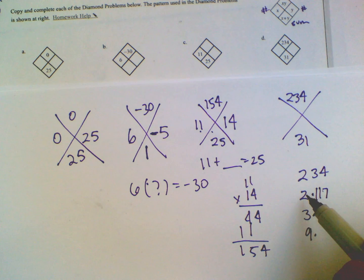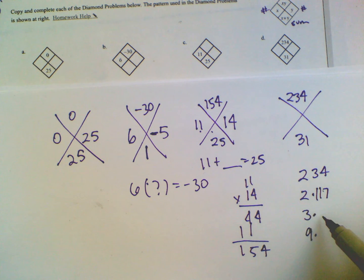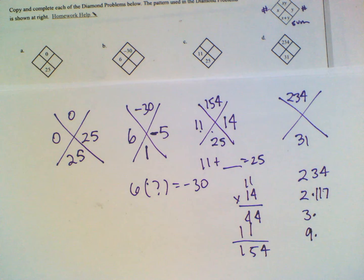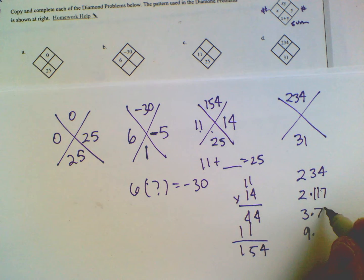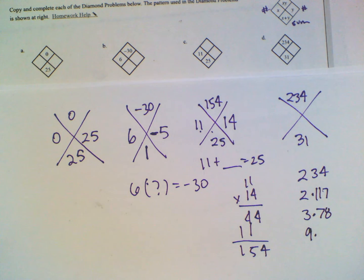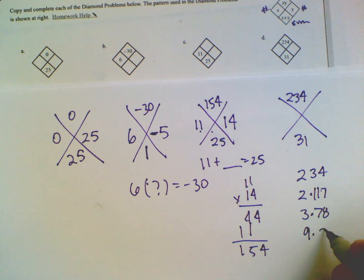So I can find a product of three times something is 234. So I'll take 234 and divide it by three and I get 78. Well, three and 78 don't add to be 31. So let's try nine. So 234 divided by nine is 26.